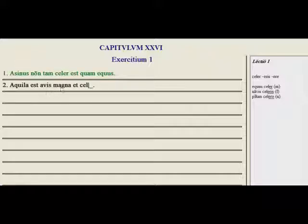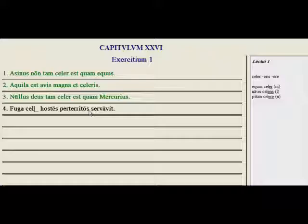Aquila est avis magna et blank. An eagle is a large and fast bird. Or we can simply say a large fast bird. We want the feminine form, which is here, caleris. And then for nullus deus tam blank est quam mercurius. No god is as fast as Mercury. We want the masculine again, so caler. Okay, try the rest of those and let's go to exercise two.